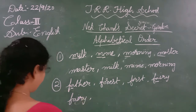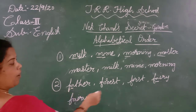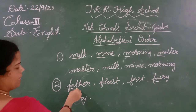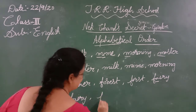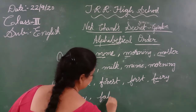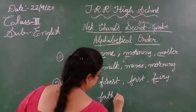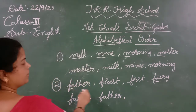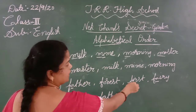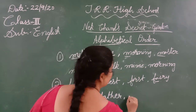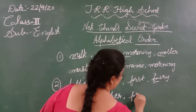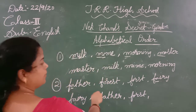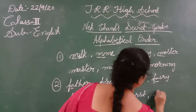Next, after I comes T — so father comes next. Then looking at the remaining words starting with FI: first and forest. The next letter after FI is R, then S, T — so first comes before forest. So the order is: fairy, father, first, and the last one is forest.